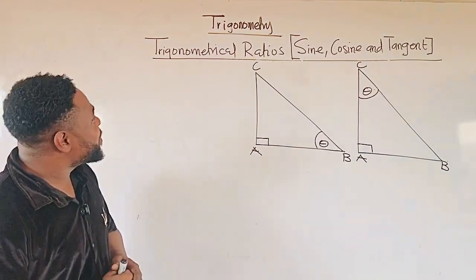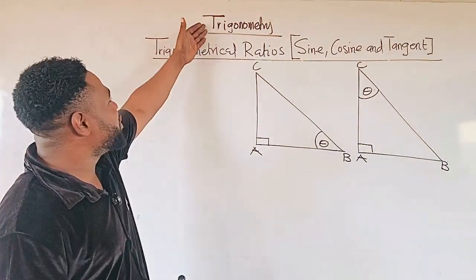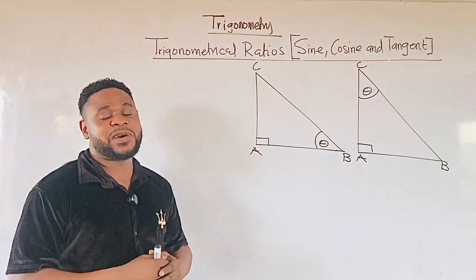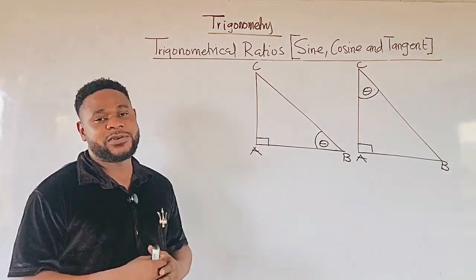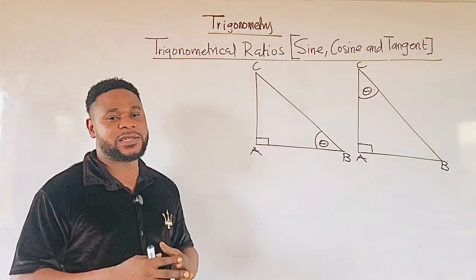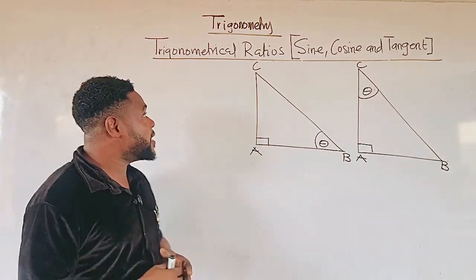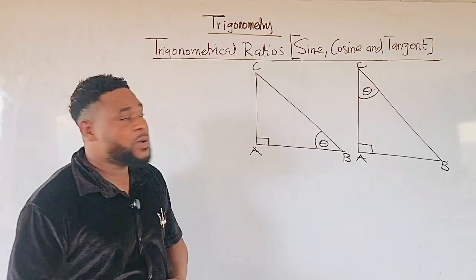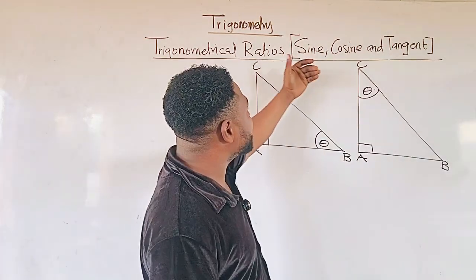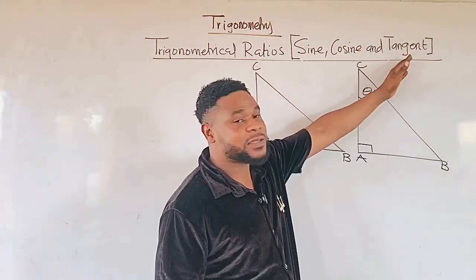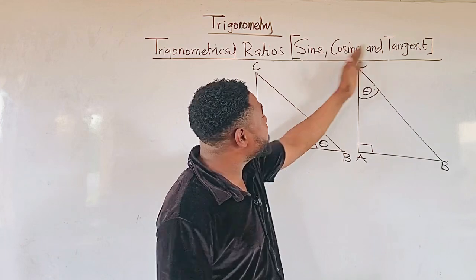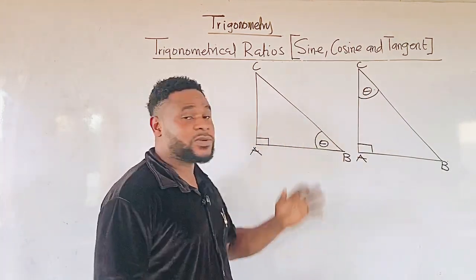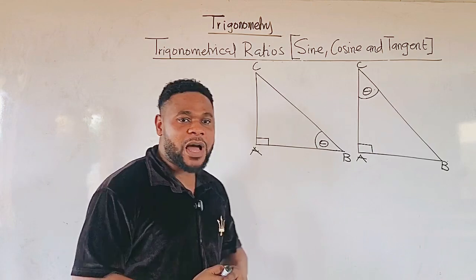Hi viewers, we want to look at the topic trigonometry. Trigonometry is a branch of mathematics used to find angles and length of the side of triangles. Today, we want to focus on trigonometrical ratios, where we'll be looking at sine, cosine, and tangent. But before we look at these ratios, let us come to these right angle triangles and study something about them.